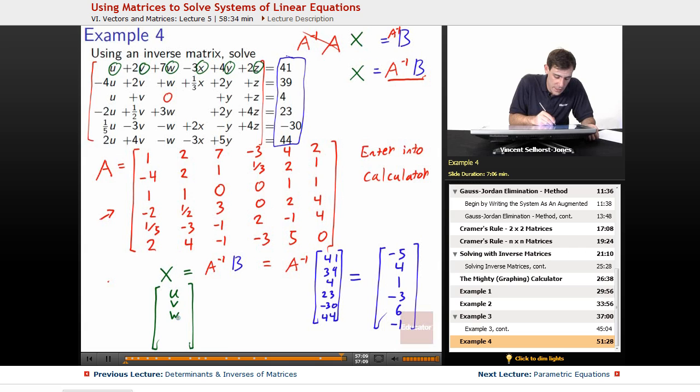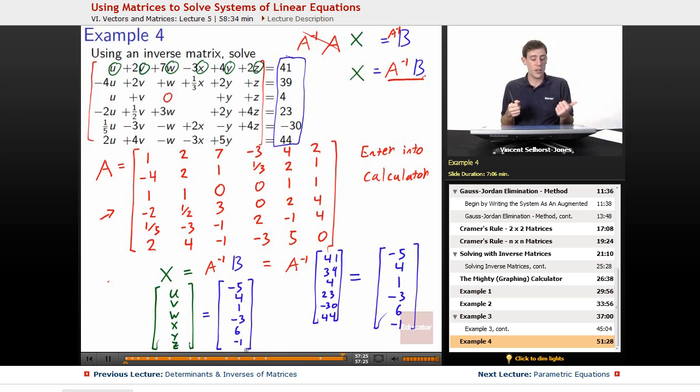U, V, W, X, Y, Z equals this thing that we just punched out, negative 5, 4, 1, negative 3, 6, negative 1. So, U equals negative 5, V equals 4, W equals 1, X equals negative 3, Y equals 6, Z equals negative 1.